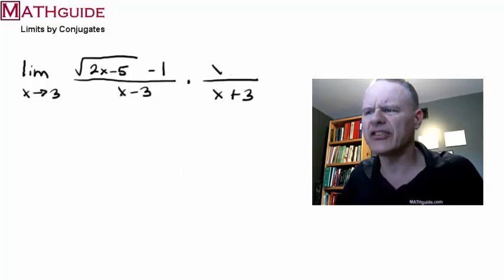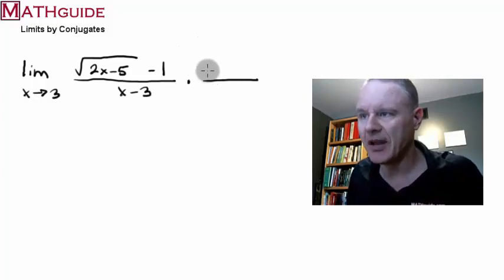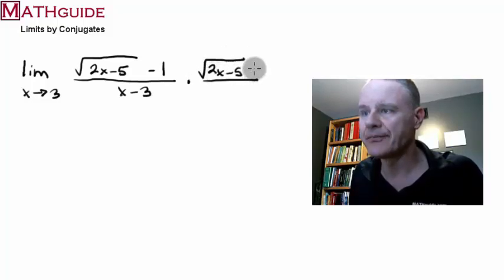Well, you think, okay, this is a short-lived video. Can't find a strategy that works. No. I am going to use conjugates. But instead, I'm going to find the conjugate of the numerator. So here's 2x minus 5. But now I'm going to put a plus here. Plus 1. There's the conjugate of the numerator.